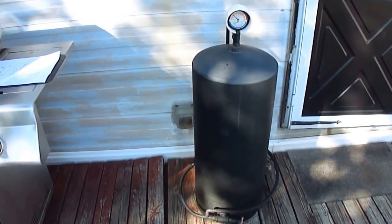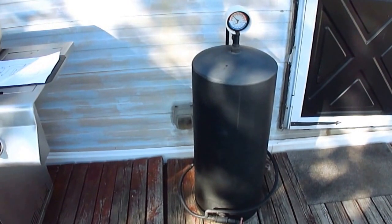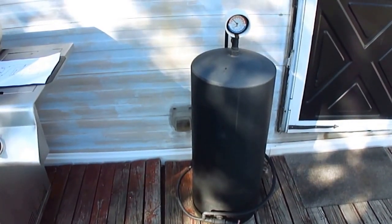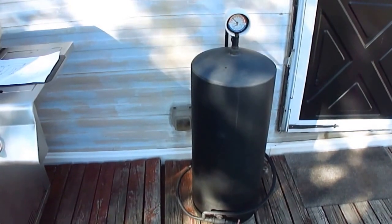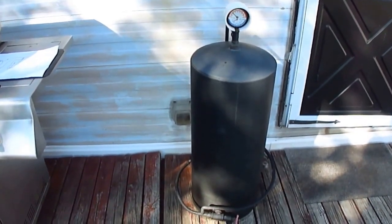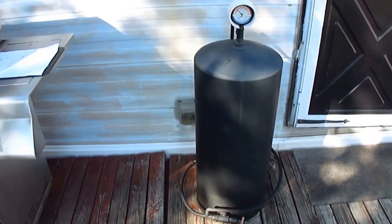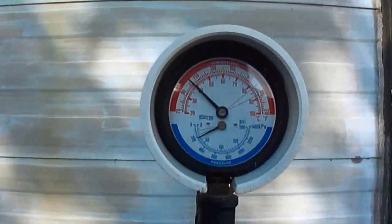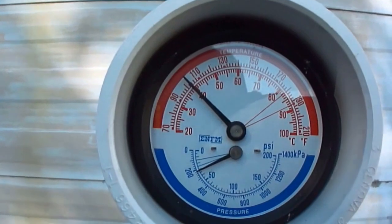Hey, how's it going? This is my solar hot water heater. It's a 20-gallon old water tank painted flat black. I've been using this about six years now. It's late in the afternoon, the sun's starting to go down. You can see we got a little over 100 degrees.